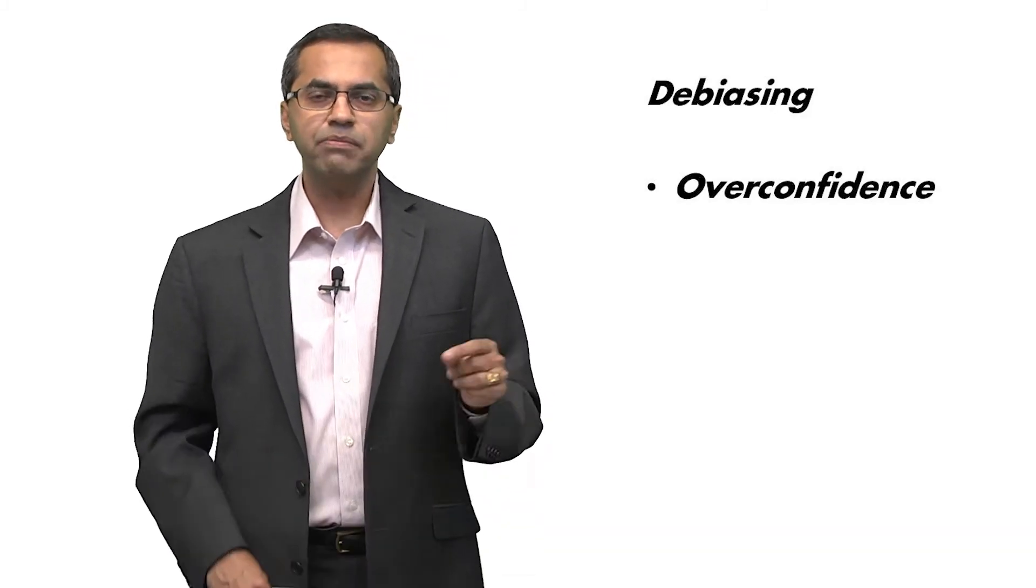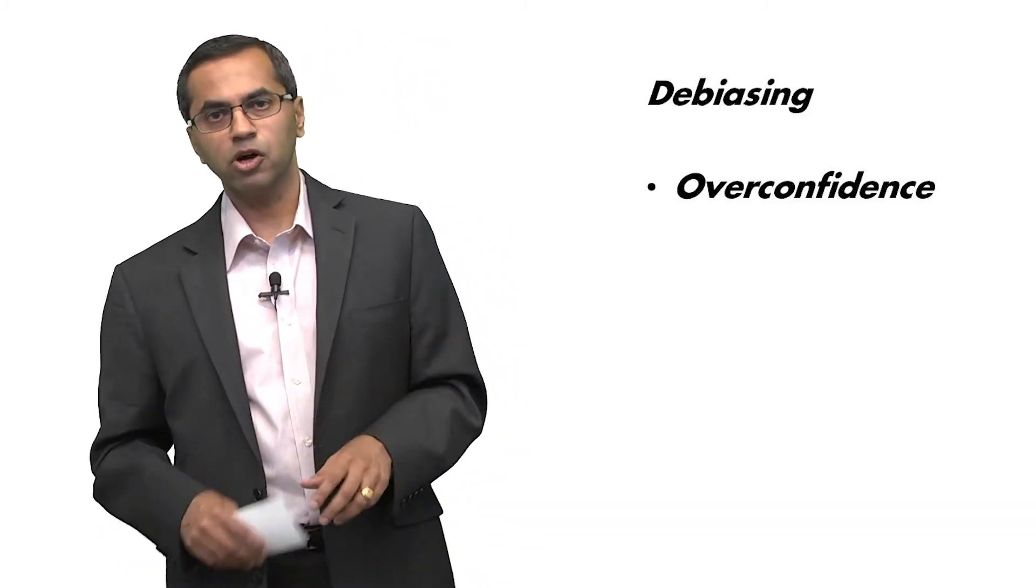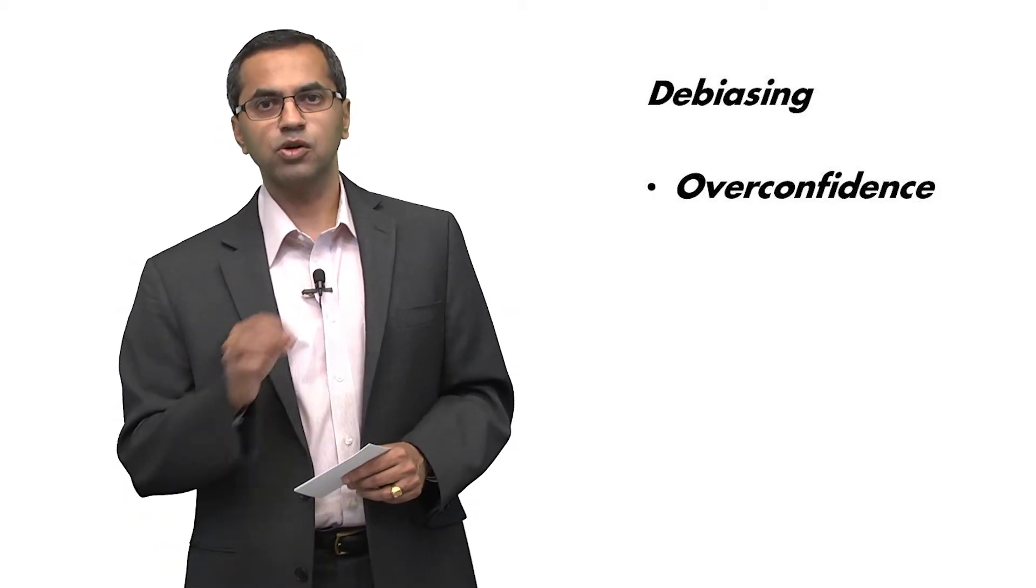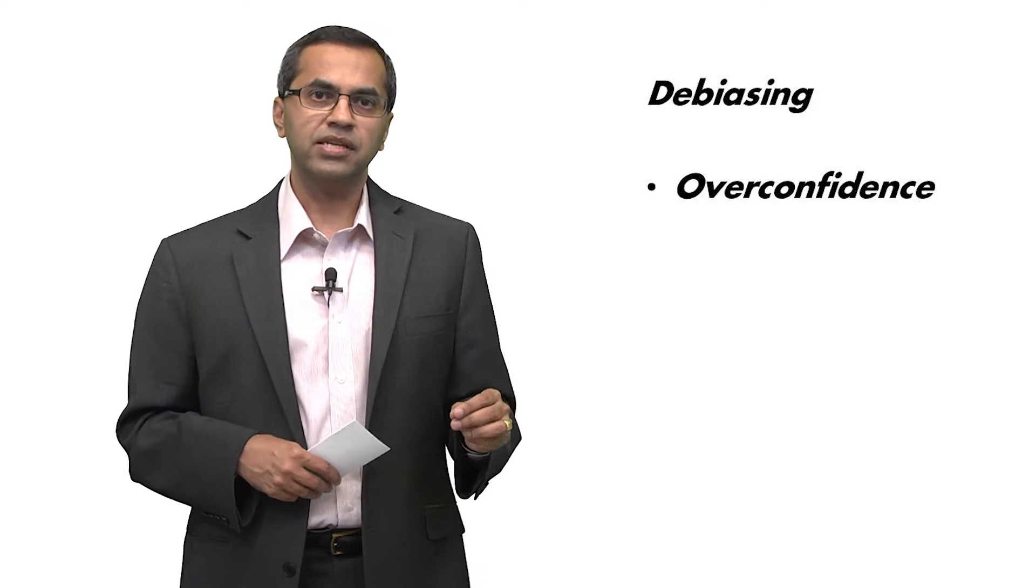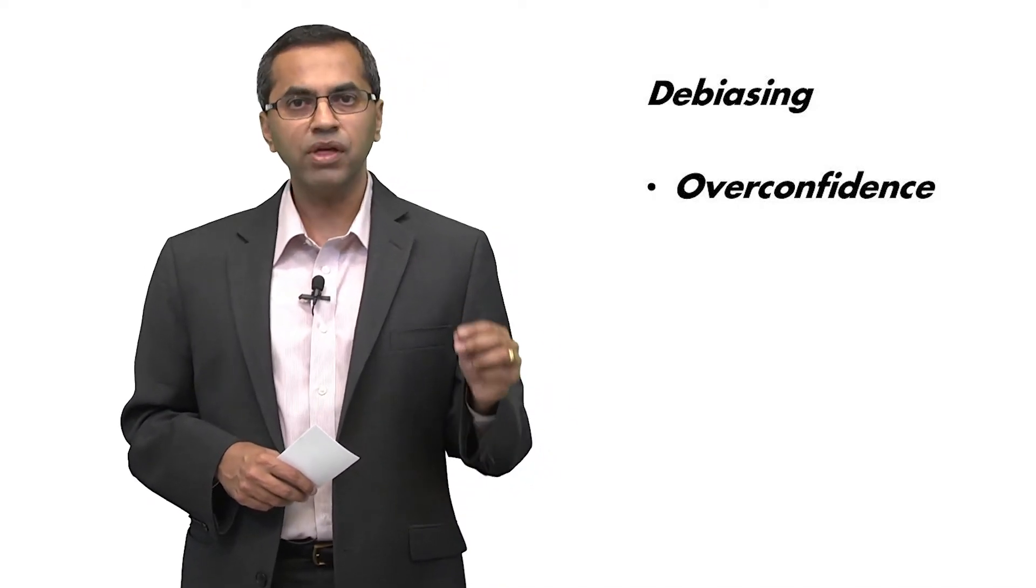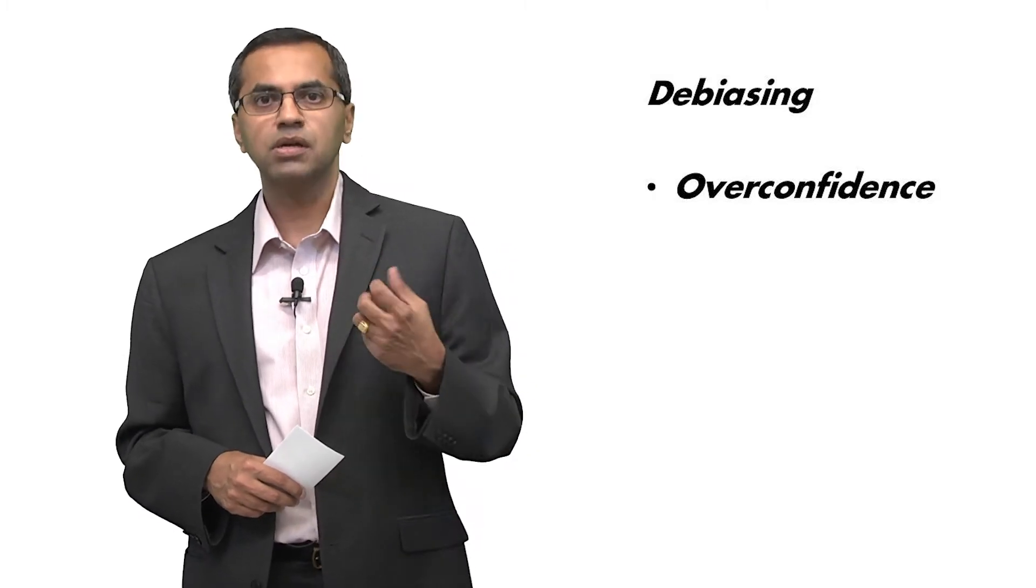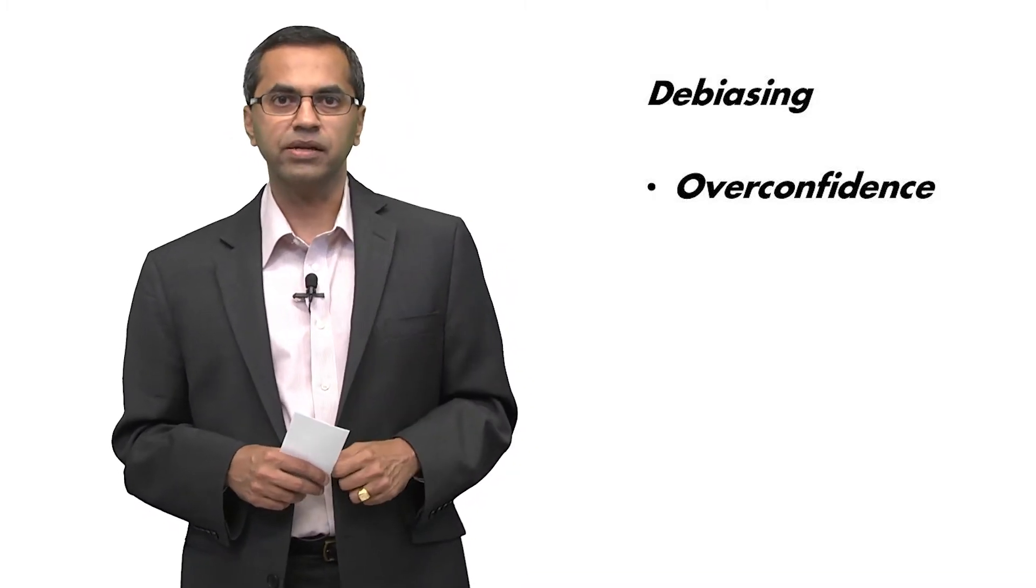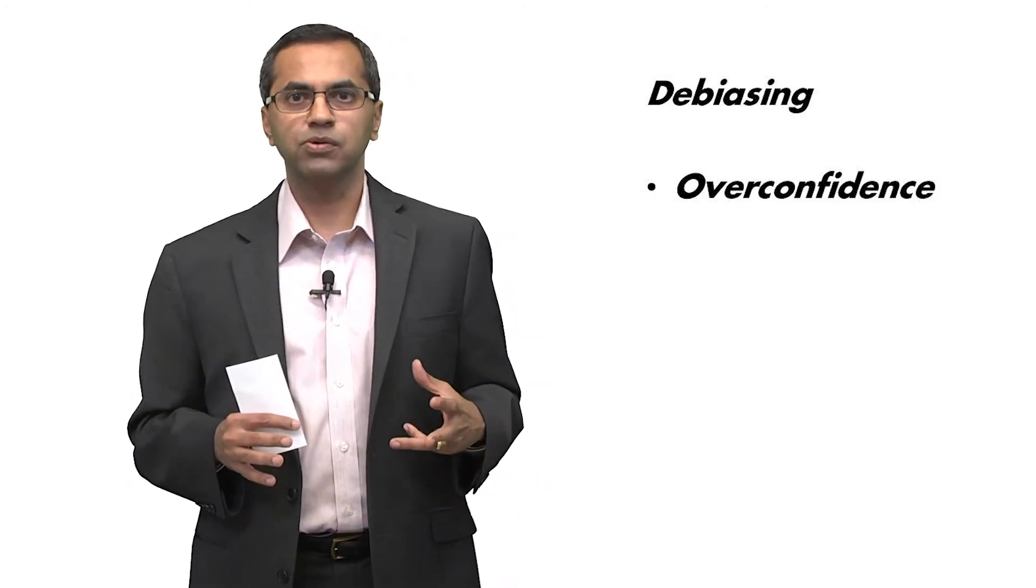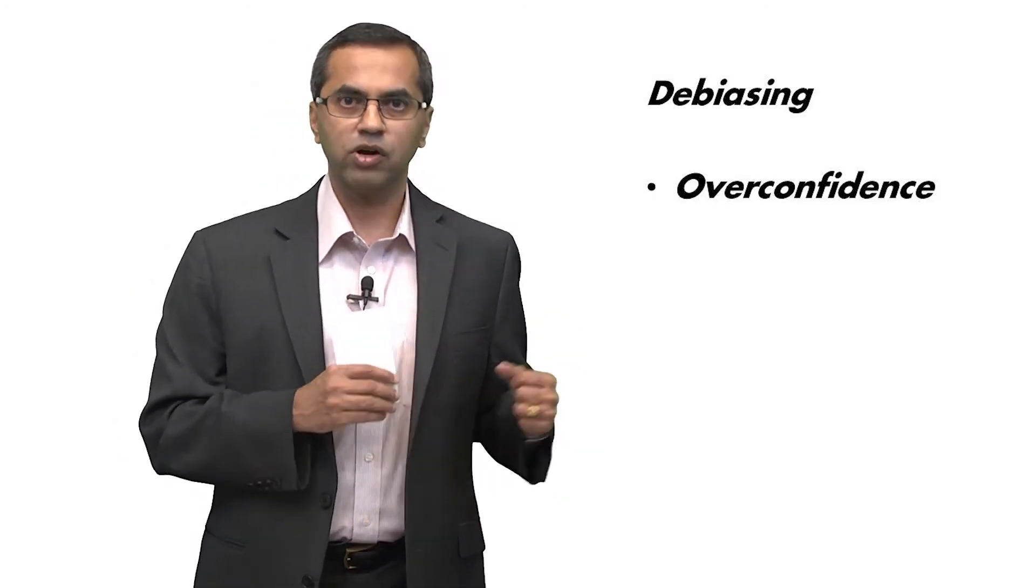Let's look at some simple examples. Overconfidence. How do we make sure that people are not overconfident? It turns out that there are two common strategies for reducing overconfidence. One strategy is simply getting people to write down two or three reasons why they think that they would be wrong with whatever judgment or prediction that they have made. Simply getting people to think about the what-if scenario reduces overconfidence.